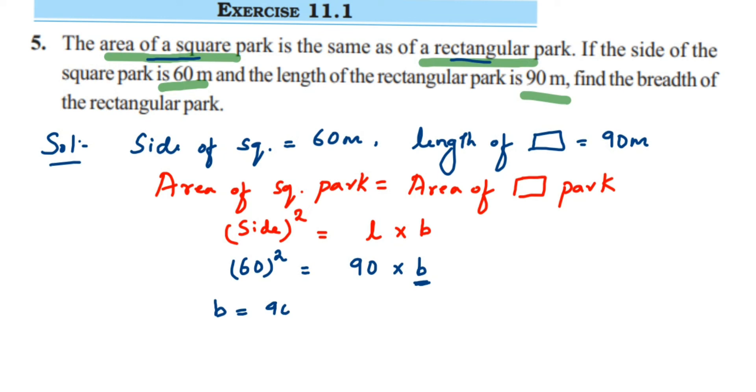b equals 60 squared upon 90. I have just rearranged the terms. This 90 comes into division, so this equals 60 squared, which is nothing but 60 multiplied by 60, or you can simply write down 3600, upon 90. Now I'm going to do the cancellation, so this zero will